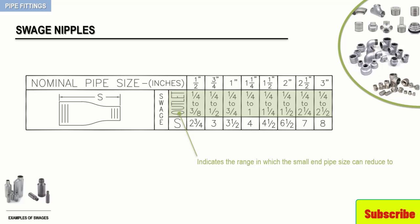Remember, all fittings attached after this swage are obviously of a smaller pipe size, and therefore will not only be shorter in length, but will also have a shorter thread engagement. These important factors should not be overlooked when calculating the center-to-center dimensions of screwed or socket-weld configurations. We will see this in detail further ahead.